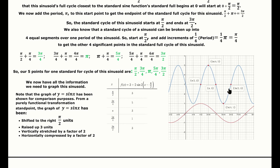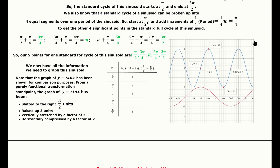We can discuss this from a general functional transformation perspective: the original sine curve has been shifted to the right pi/2 units, raised upward 3 units, vertically stretched by a factor of 2, and horizontally compressed by a factor of 2. If you understand this example, you have a solid grasp of this section. Back up the video to make sure you fully understand before moving on.